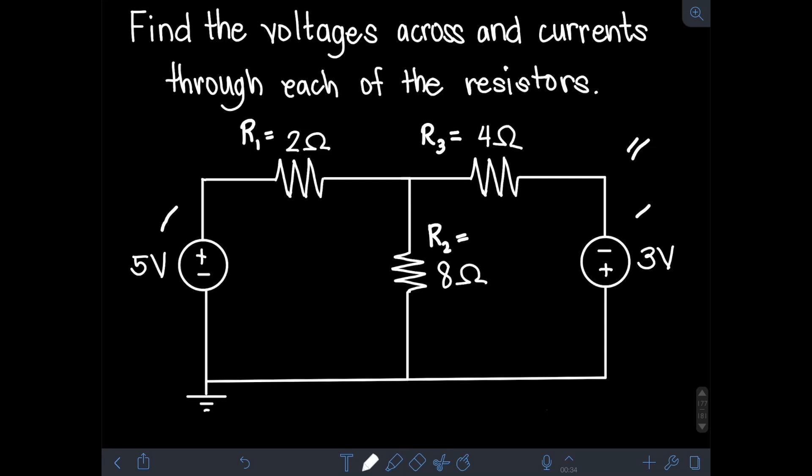The first step in solving a circuit using KVL and KCL is to assign the direction of the currents through each resistor. At first, it doesn't matter whatever directions we assign, because in the end if we notice that the values of the currents we solved are negative, it just means that our assumed direction is opposite. So let's arbitrarily assume the direction of each current flowing through the resistor. For R1, I'll assume current going to the right. For R2, I'll assume upward direction. And for R3, I'll assume going to the right.